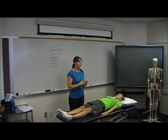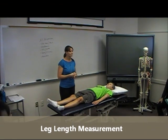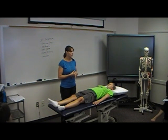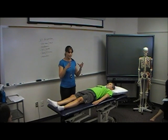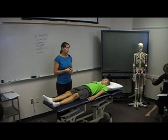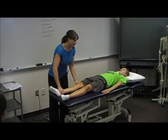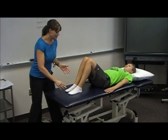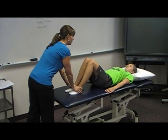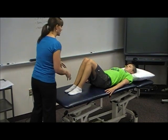One thing we always want to look at with hip anomalies or pain is leg length, because something as simple as a leg length discrepancy can really aggravate the hip and the low back. We always want to make sure in standing that we're looking for anomalies, but also when the patient is supine. One way to assess real leg length discrepancy is to have the patient supine — I'll bend your knees — and have the patient do a bridge, lift your bottom up and come back down, to make sure that they're even and their weight isn't distributed unevenly on the table.